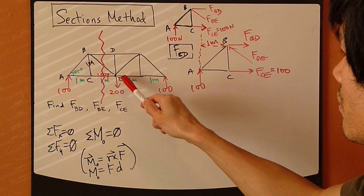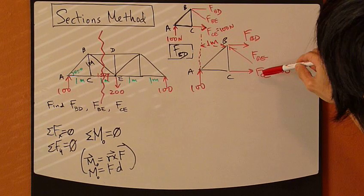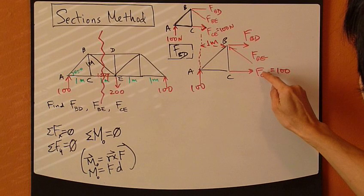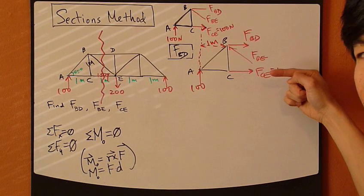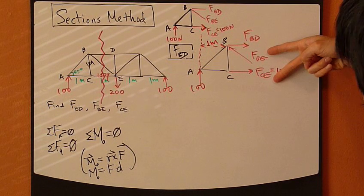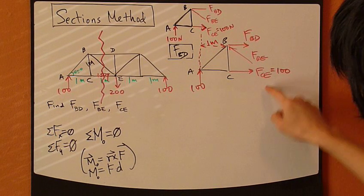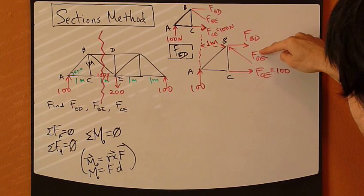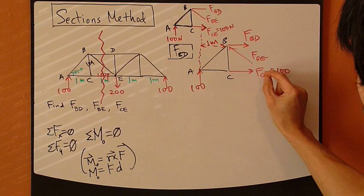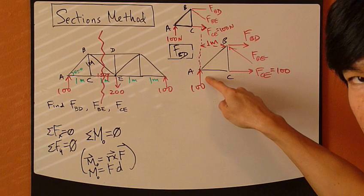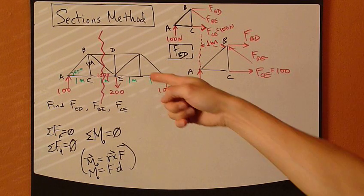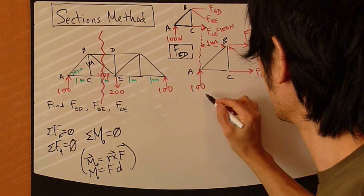What about joint E? E is somewhere outside the free body diagram. If we pick joint E, FBE passes through joint E, so it creates no moment and disappears. CE also passes through joint E and disappears. What's left is BD and the 100 Newton force — they will create a moment about point E. I'll draw dashed lines to indicate these members don't belong in the free body diagram, just to help visualize joint E's location.